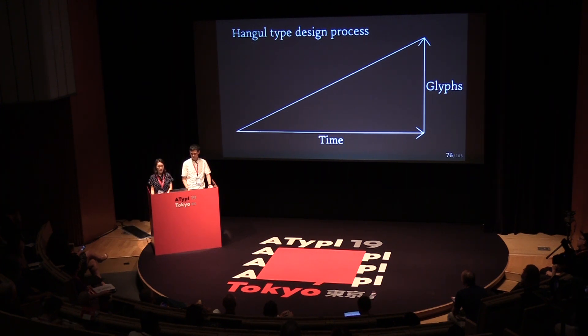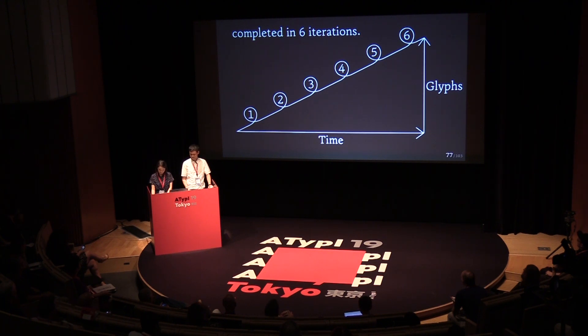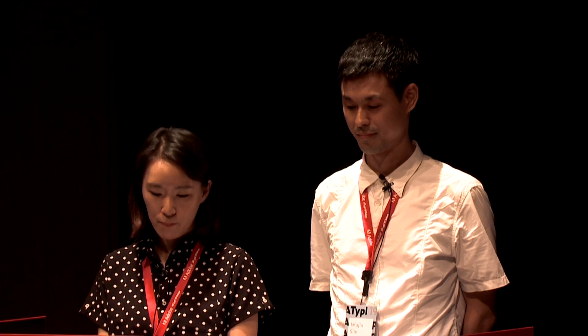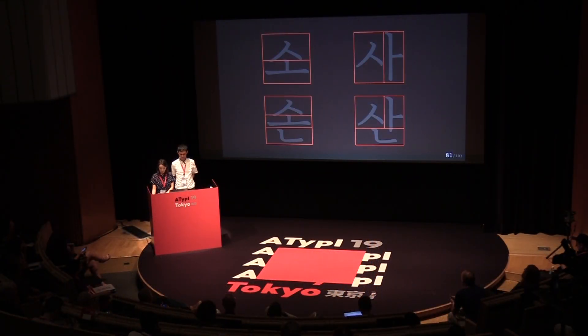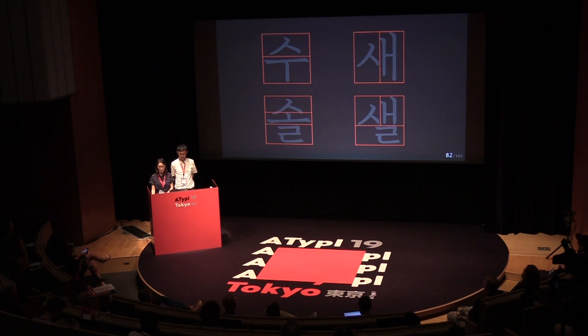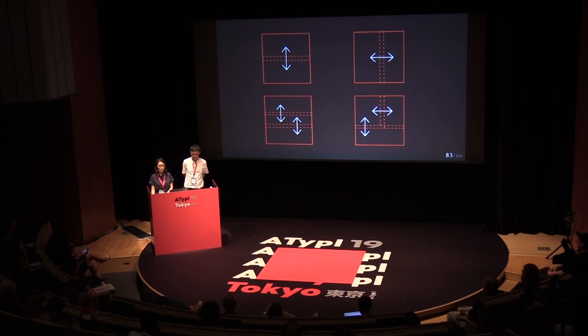From the fifth iteration, the work is getting more delicate and difficult. We did deep research beforehand to set more accurate criteria for this part of the process. From the first to fourth iteration, we focused on the frameworks. Now we are refining many details about the outline of the glyph. As you see here, the space taken by each jaso is different for each framework. The position and proportion of each jaso in the framework could be placed lower or higher, left or right, to find the optimal position.